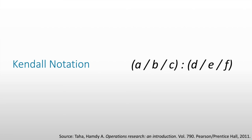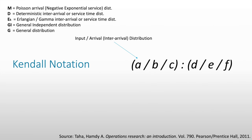So how do we put these characteristics of a queue in mathematical form? We call it the Kendall notation. The Kendall notation is composed of six different characteristics which we have discussed earlier. Letter A would be the input or the arrival or inter-arrival distribution. It could either be M, which stands for Markov — Poisson arrival or negative exponential service distribution, which is the most common. D is deterministic inter-arrival or service time distribution. E sub K is Erlangian or the gamma inter-arrival or service time distribution. GI would be general independent distribution. And G would be general distribution.